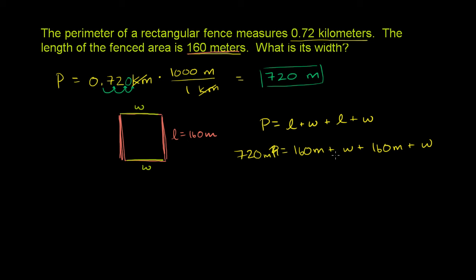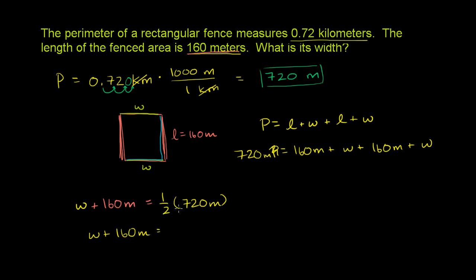Now there are a bunch of different ways to solve for the width. One way: if I just have the width plus the length once, that's going to add up to half of the perimeter. So if I take my width W plus my length — 160 meters — this should equal one half of the perimeter. One half times 720 meters gives us width plus 160 meters equals 360 meters.